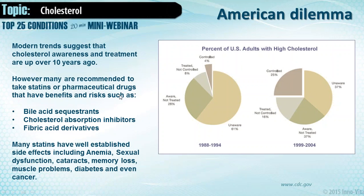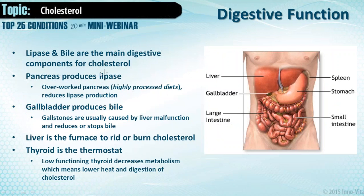Many are recommended to take statins and pharmaceutical drugs that have benefits and risks such as bile acid sequestrants — which can get in the way of bile acid flow and actually create more gallstones — and cholesterol absorption inhibitors. Statins have well-established side effects including anemia, sexual dysfunction, cataracts, memory loss, muscle problems, diabetes, and even cancer. I'd rather use diet control and Cardi-R. Lipase and bile are the main digestive components for cholesterol. Lipase comes from the pancreas — amylase, protease, lipase — from pancreatic function.